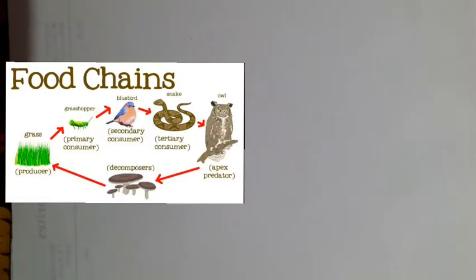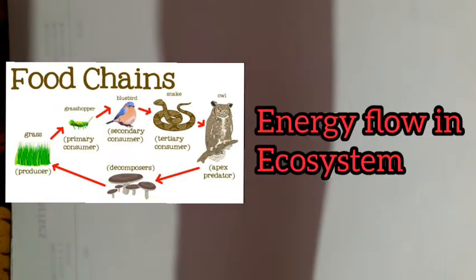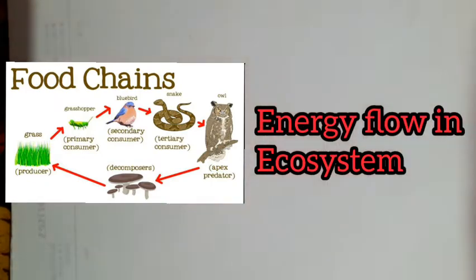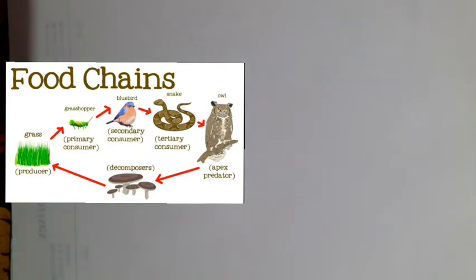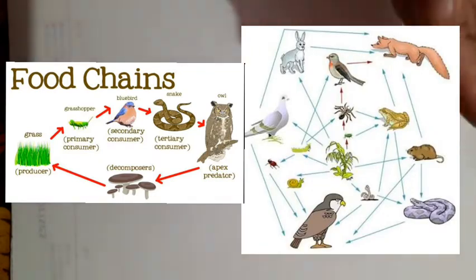Hello everyone, welcome to my channel, The Biology Key. In the previous video I talked about the energy flow in an ecosystem, in which we studied about the food chain and the food web. Basically, these stages which take place from the producers to the decomposers involve various animals.